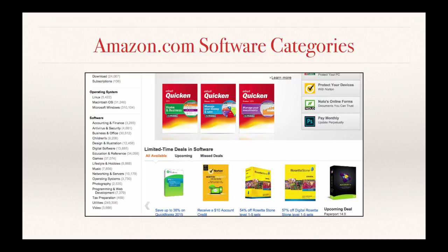Here's a screenshot from Amazon's website — everything under software is going to be an application, and this gives you an idea of how many products they have in each category. Utilities has the most products with 250,000 products. The next three — business and office, education and reference, and games — each have between 30,000 and 40,000 products.